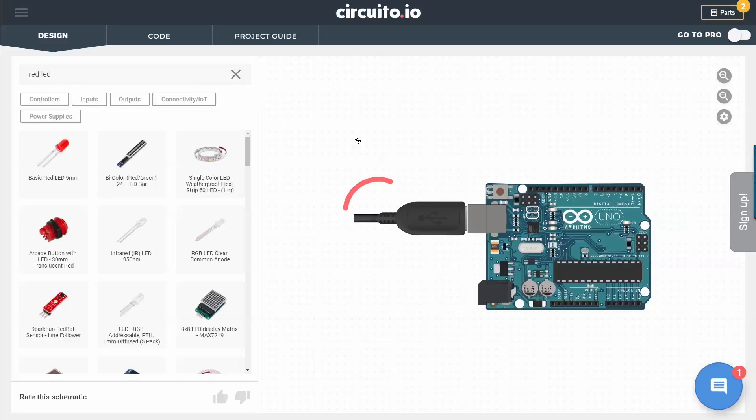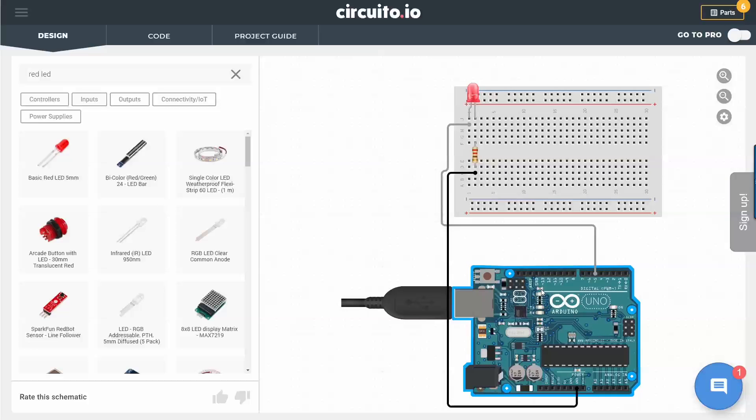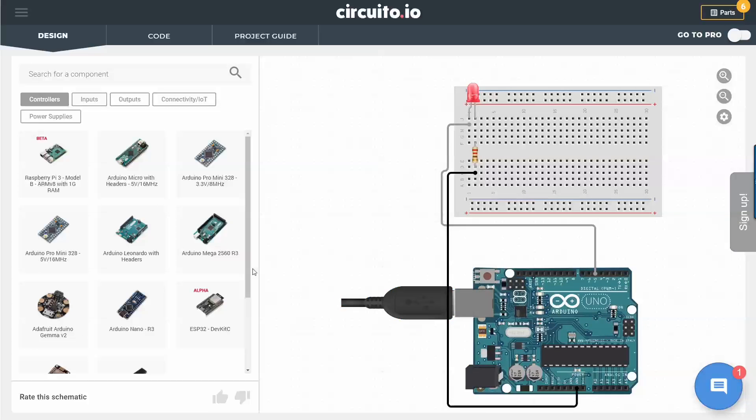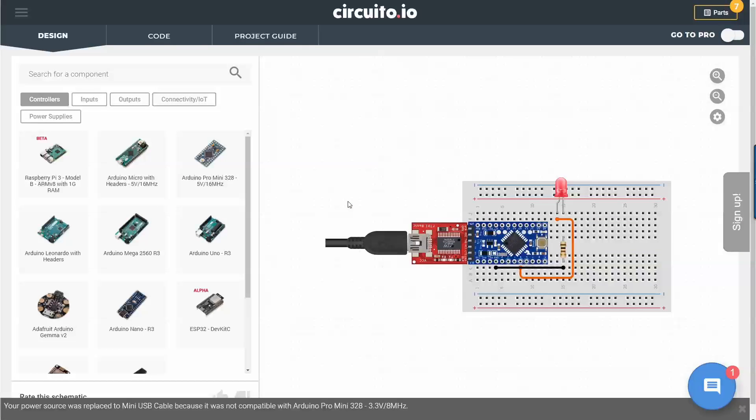Let's take, for example, a red LED and drag it onto the canvas. If we swap the Arduino Uno to a different controller, such as the Arduino Pro Mini 3.3V, you will notice that the resistor changes from 220 ohm to 100 ohm.